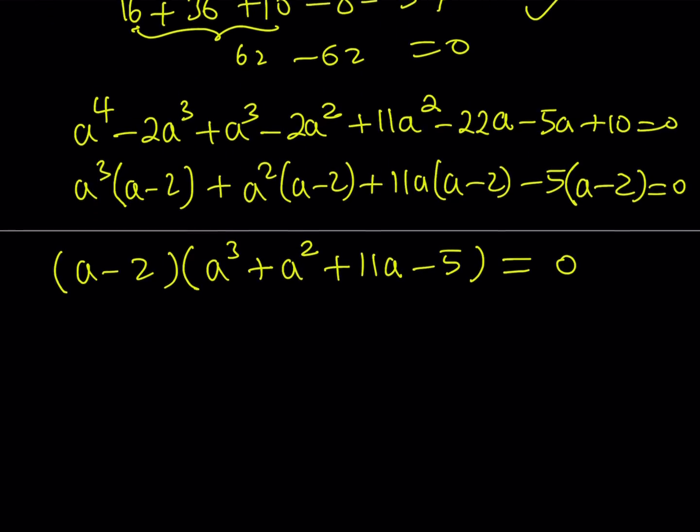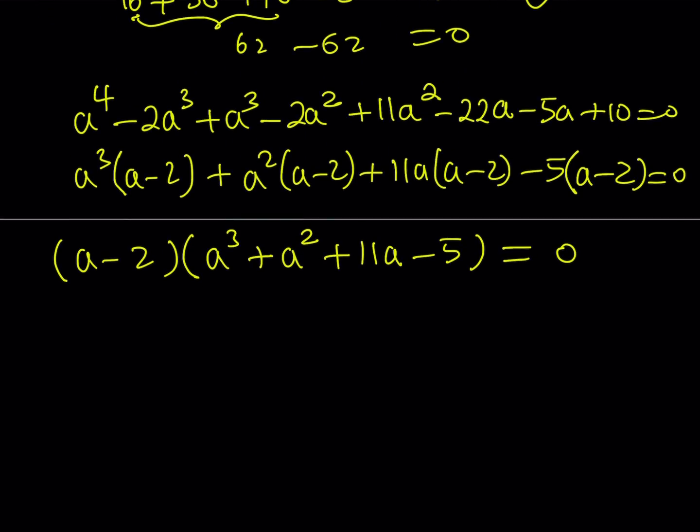Now we could repeat the same process here looking at rational solutions. But unfortunately, after checking plus minus 1 and plus minus 5, which are the only divisors of negative 5, you're going to find out that none of them work, which means this equation has no rational solutions. I'm talking about the cubic. Well, does it have any real solutions? Yes, it has to have, because if you have a cubic equation with real coefficients, then it has to have at least one real solution.